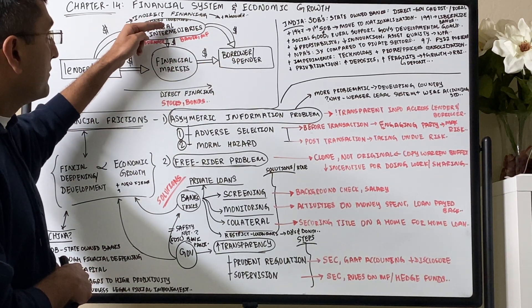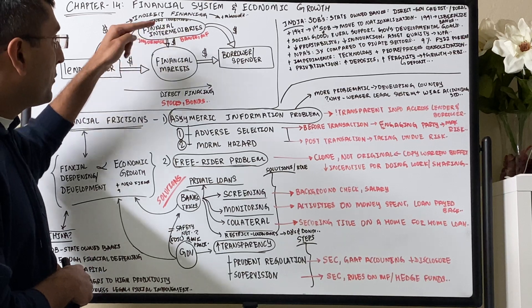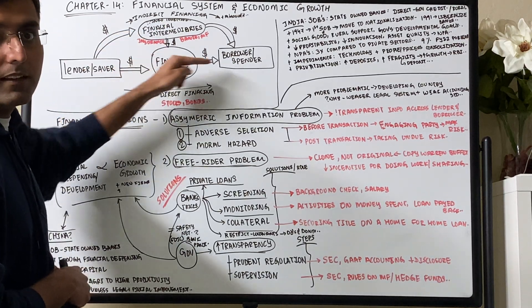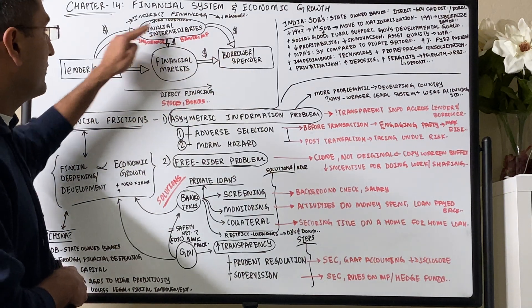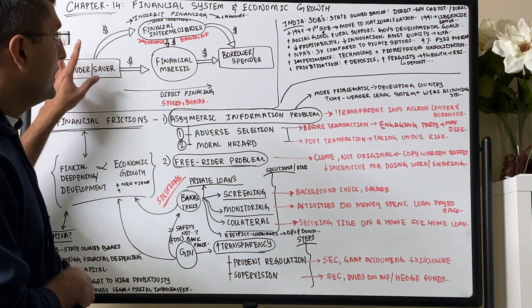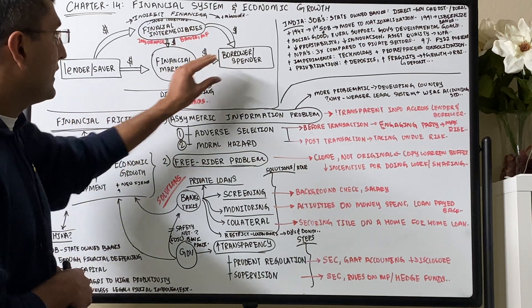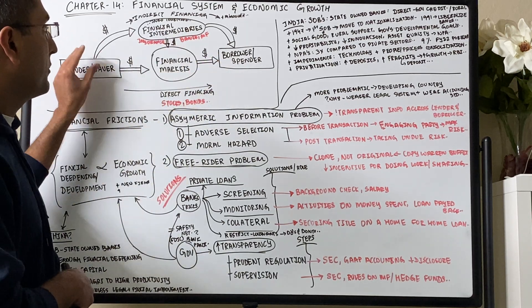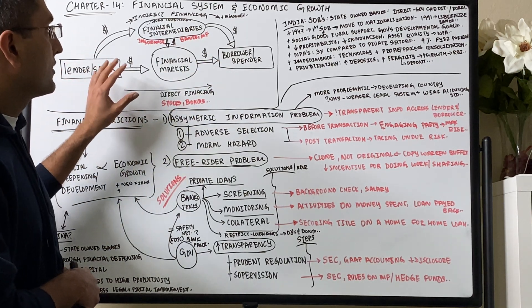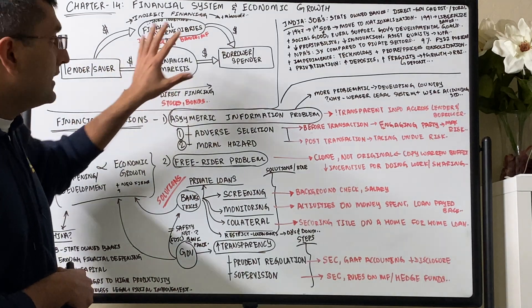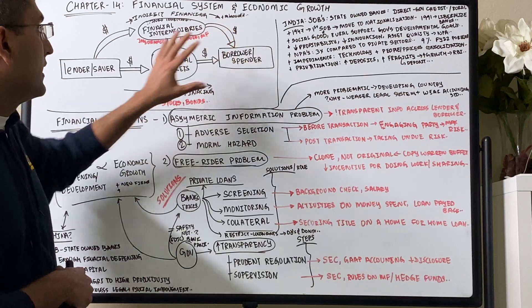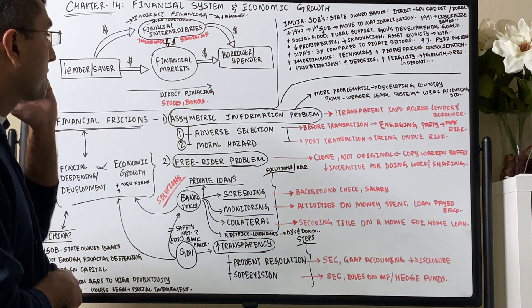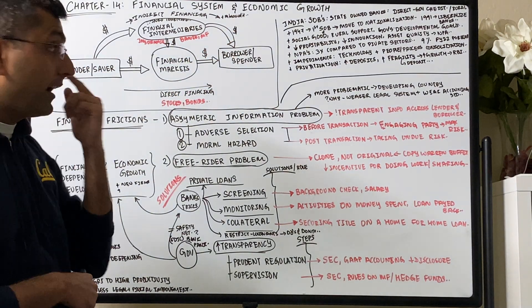Or the bank can invest that money you've deposited into financial markets and give it to the borrower, make money, and give it back to you. This financing of directly or indirectly going to the borrower enables growth because these people can spend it and get to the growth. Now in this model, what are the problems? Are there frictions?